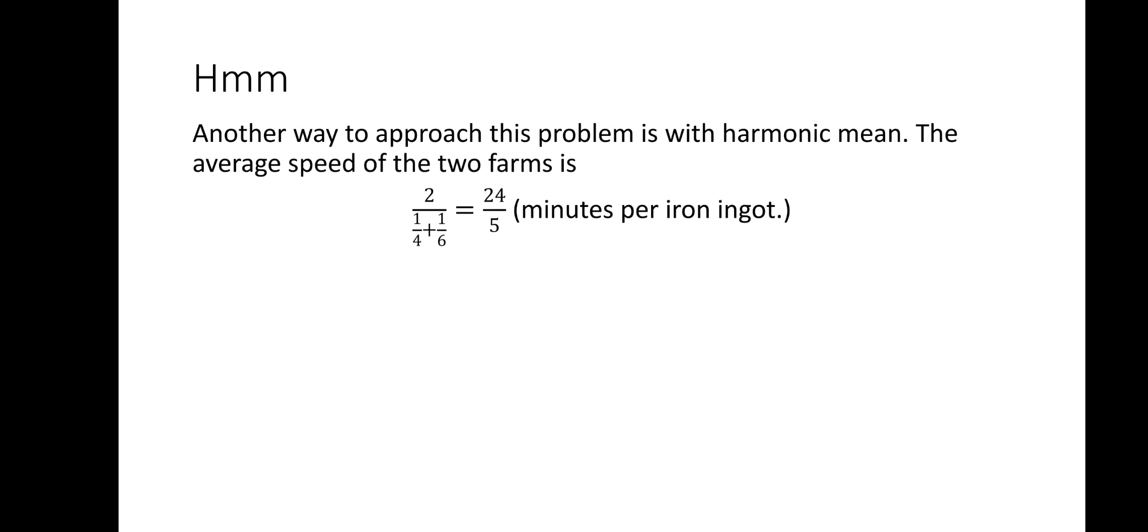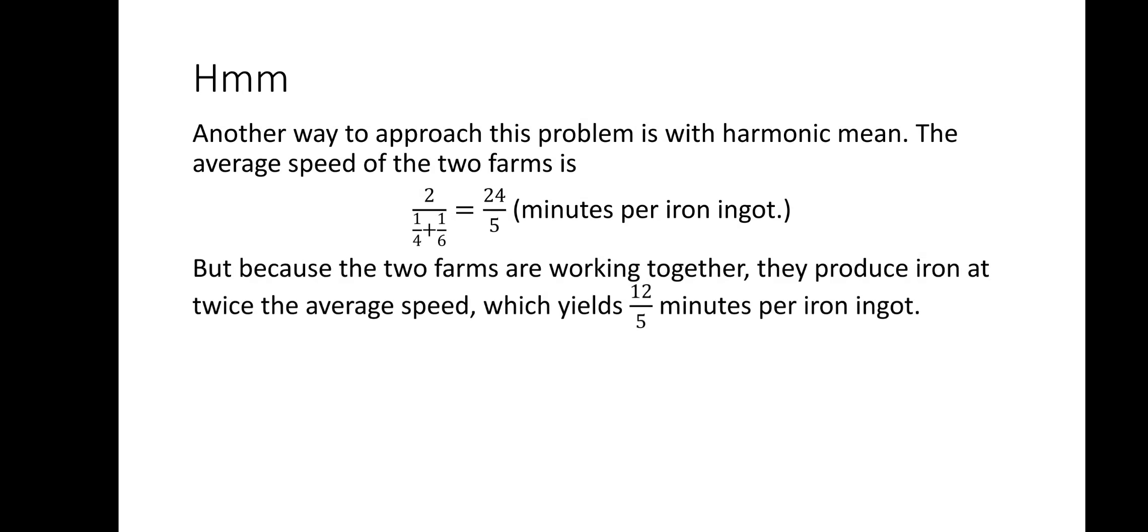Another way to approach this problem is with harmonic mean. The average speed of the two farms is 24 over 5 minutes per iron ingot. But two farms are working together, so they produce iron at twice the average speed, which yields 12 over 5 minutes per iron ingot. So our answer is again 120 times 12/5 or 288.